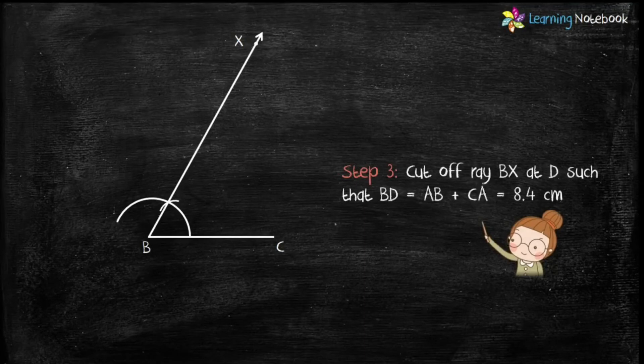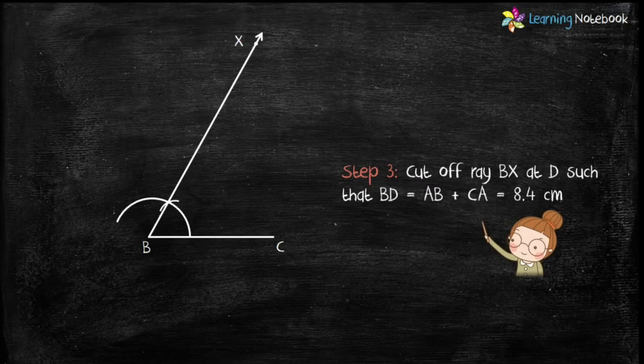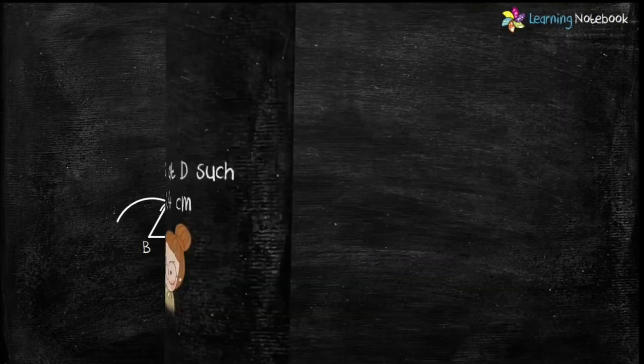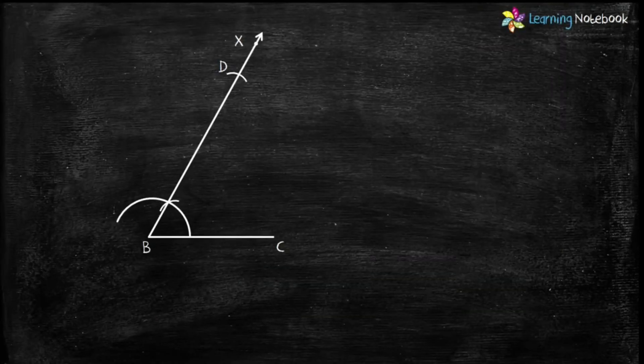Now we are given AB plus CA equals 8.4 centimeters. So take radius of 8.4 centimeters and cut off ray BX at point D. Step 4 is join DC.